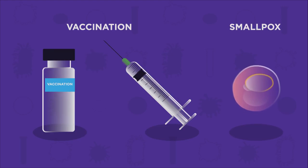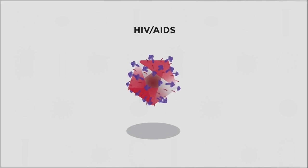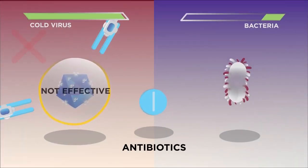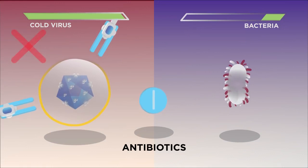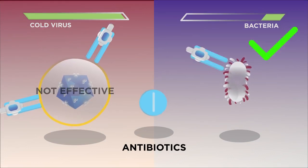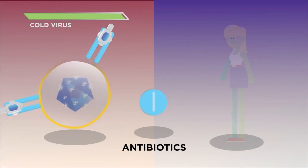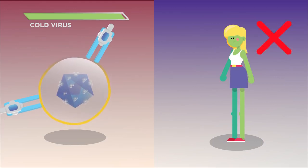However, some viruses like HIV have proved impossible to develop any kind of vaccine for. Did you know that antibiotics do not work for viruses? They are only for bacterial infections. If you have a cold or flu you shouldn't be taking antibiotics — they won't make any difference.